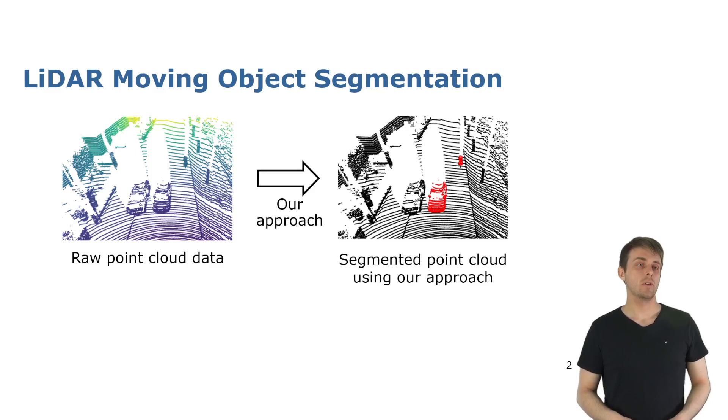If you think about localization and mapping, the information about moving and non-moving parts could be more important. So the task of LiDAR moving object segmentation is to decide for each point if it belongs to a moving object or not. On the right we show some examples like moving objects in red such as the driving car or cyclists and some static objects in black such as a parked car or the buildings around us.